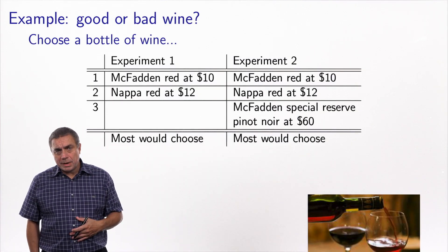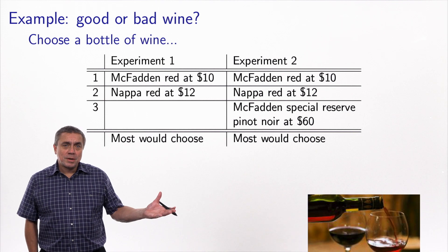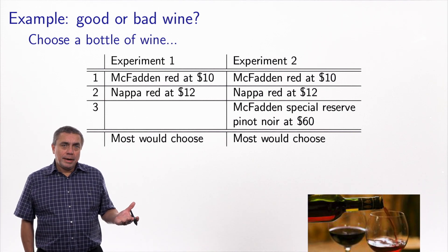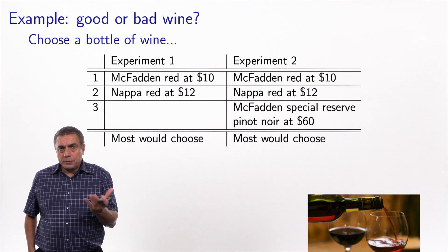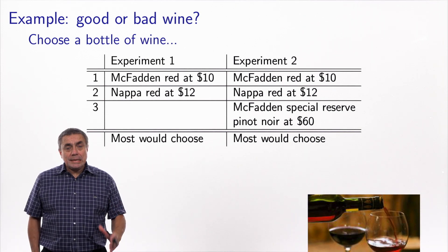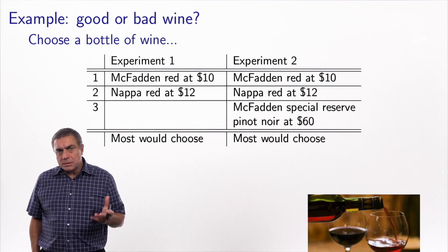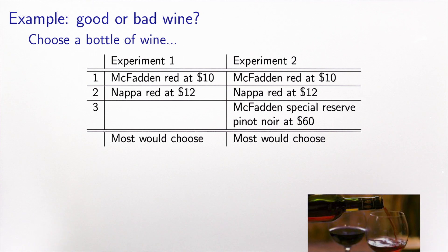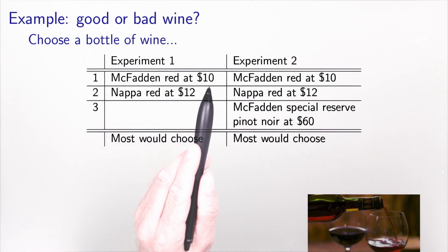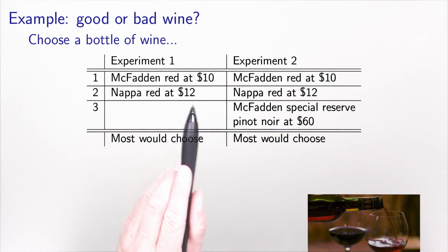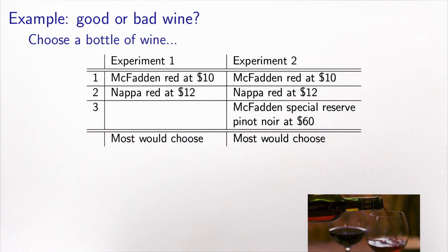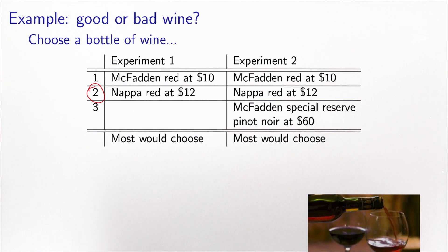Here is another example proposed by Daniel McFadden, who happens to have a vineyard and makes his own wine. In the first experiment, people chose between a McFadden red at $10 or a Napa red at $12. McFadden is well known for his contributions to economics but not as much for his wine, so most people selected the Napa red, which is known to be very good quality and only slightly more expensive.